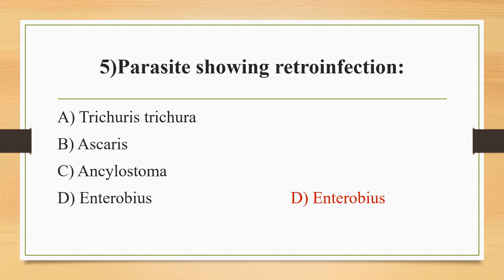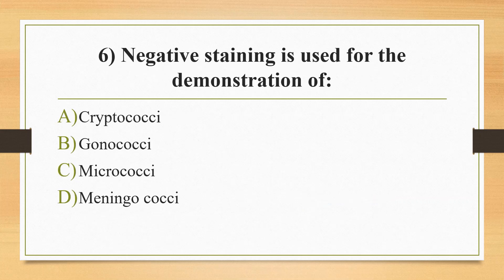Sixth question: negative staining is used for the demonstration of option A Cryptococcus, option B Gonococcus, option C Micrococcus, option D Meningococcus. The answer is option A, Cryptococcus. Cryptococcus is always used as a positive control for India ink staining. In wet mount preparation, cerebrospinal fluid is used as the sample. Another negative staining method is the nigrosin method. Cryptococcus is an encapsulated yeast capable of surviving in both animals and plants.